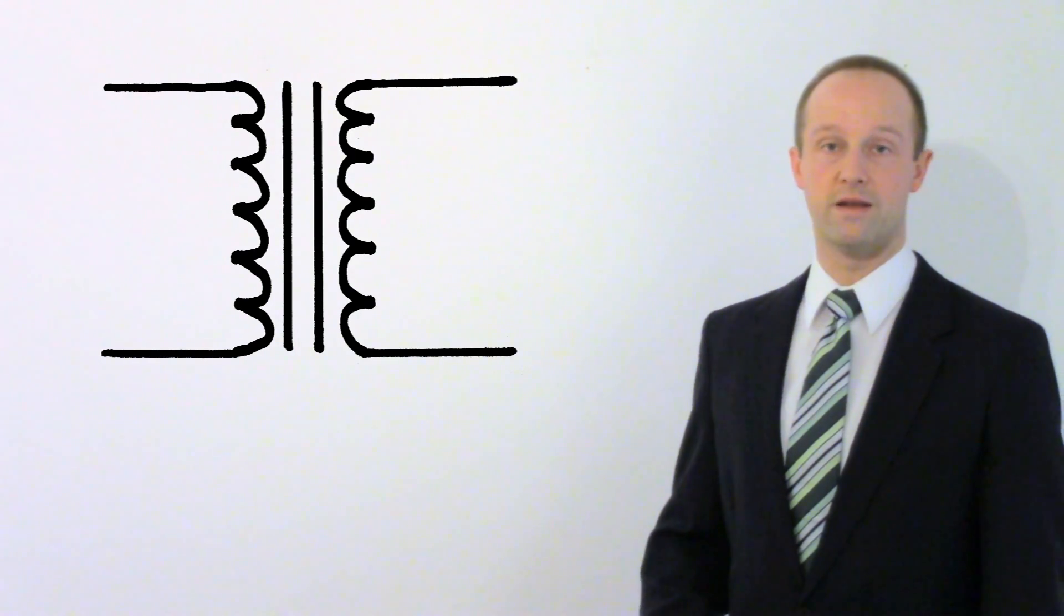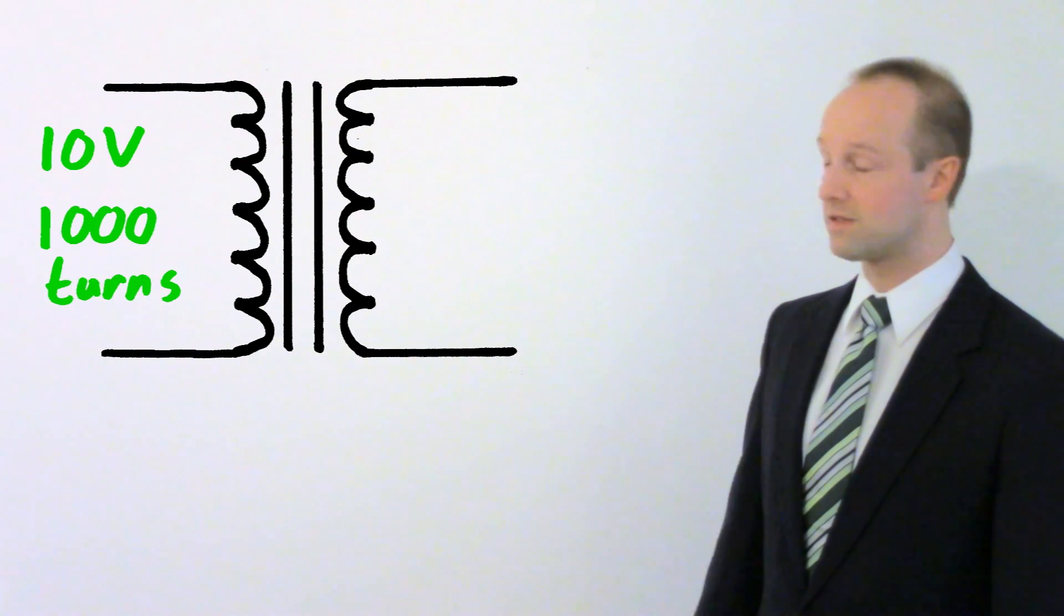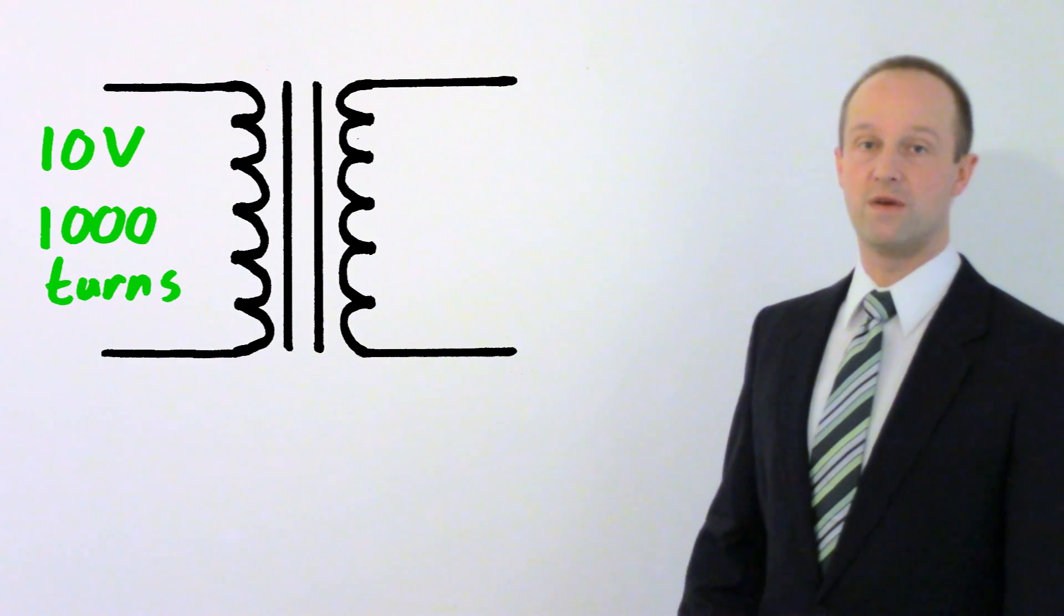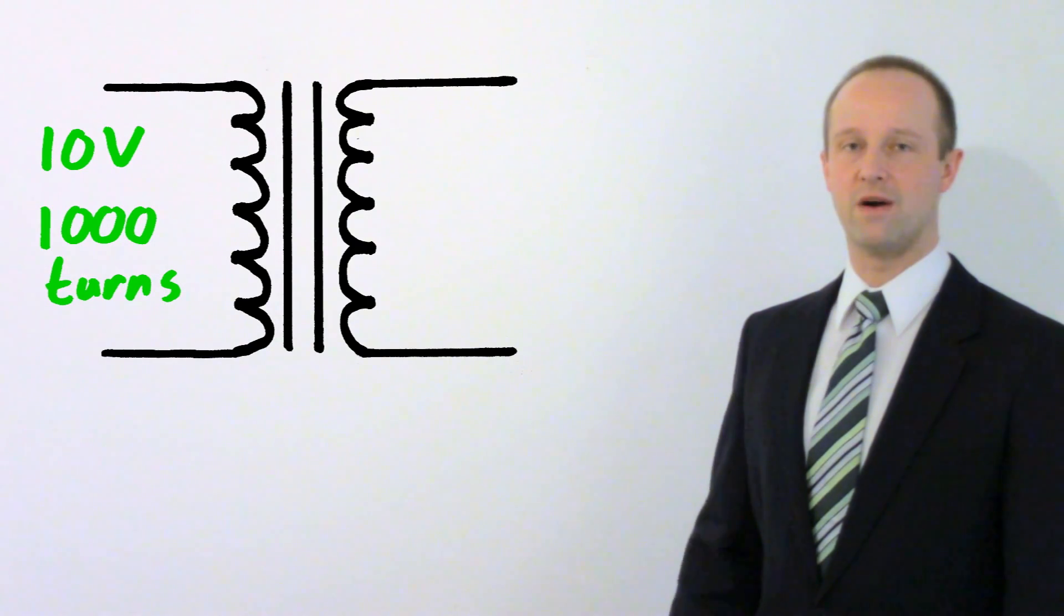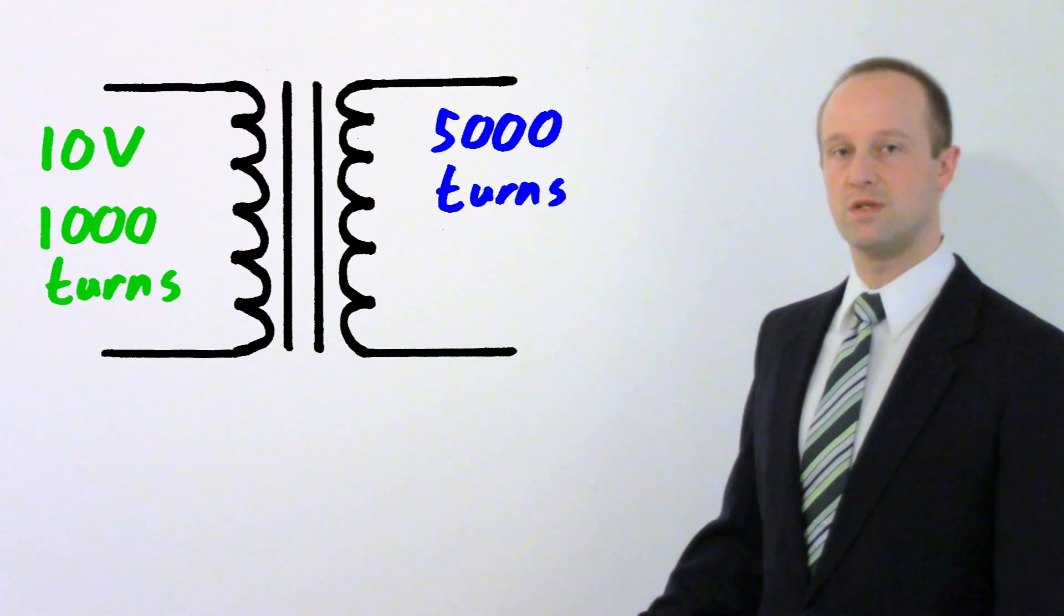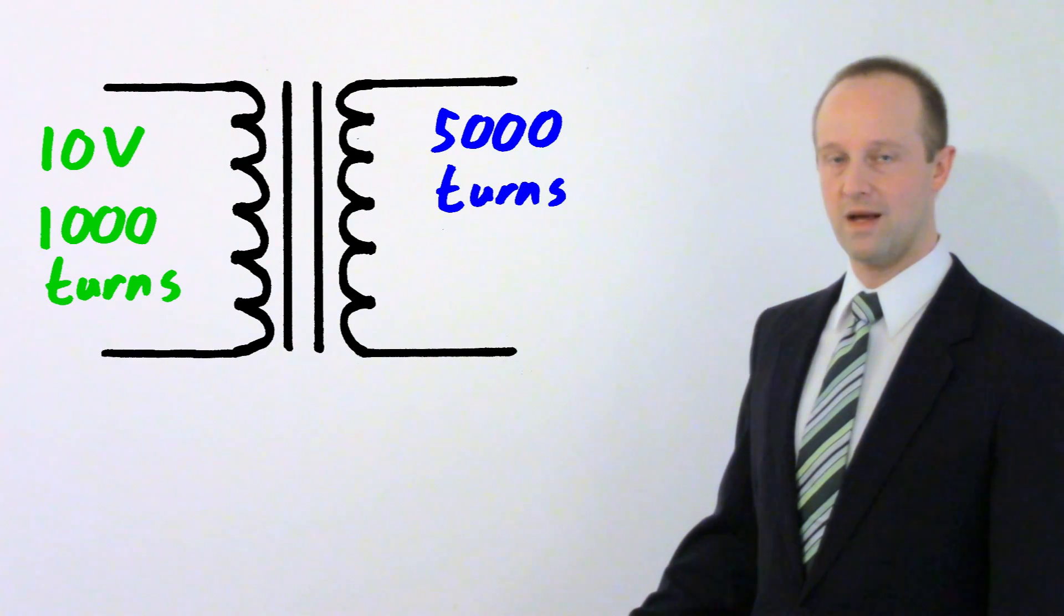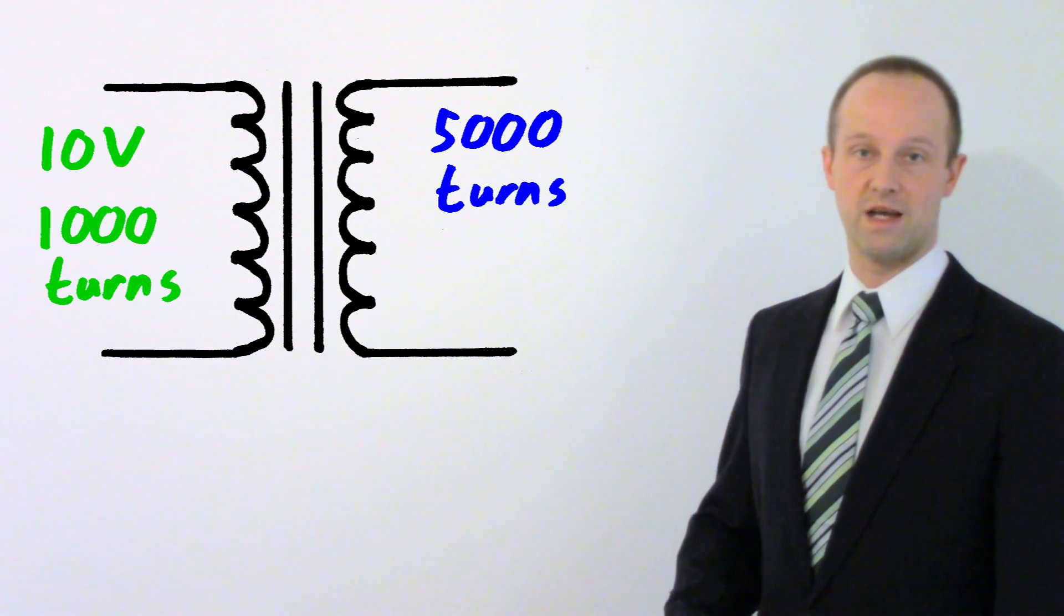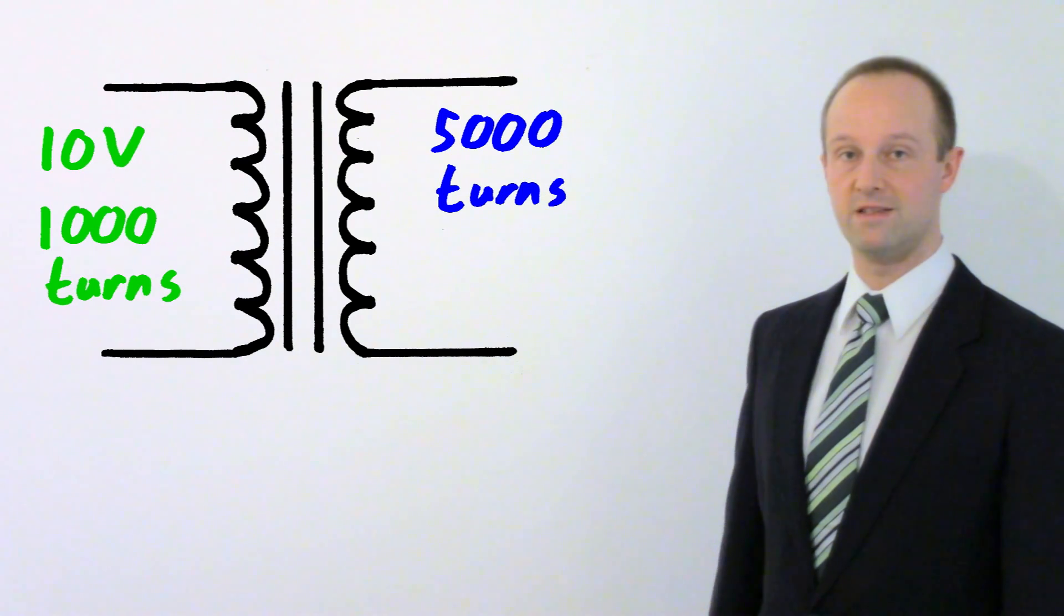So if we are putting in a potential difference of 10 volts for example and we've got a thousand turns on the primary coil and we've got five thousand turns on a secondary coil then we've got five times as many turns on that secondary coil and so we'll get five times the potential difference which in this case is just 50 volts.